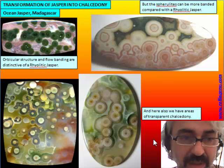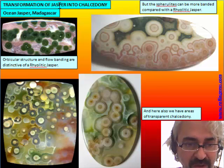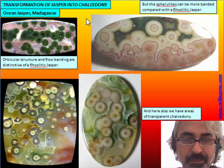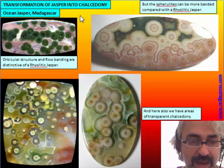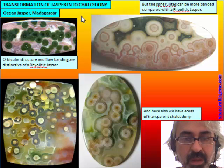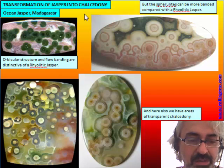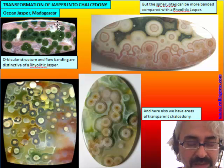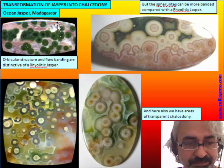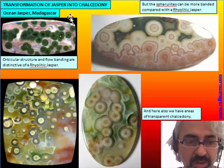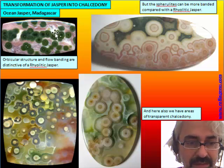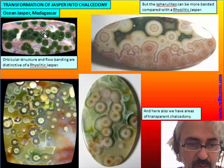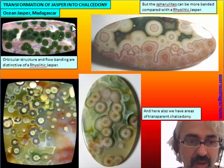Another very famous material that has passed through a transformation from Jasper into chalcedony is Ocean Jasper. Ocean Jasper, which we analyze when speaking about orbicular and rhyolitic Jasper, is formed from an obsidian: there is the alteration of an obsidian. Here we can see the flow banding of the original lava glass from the eruption, and the orbicular structure — the spherulites — that resulted during the devitrification of the obsidian.